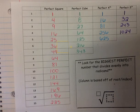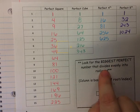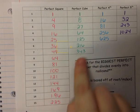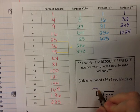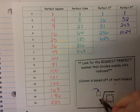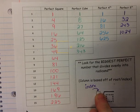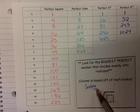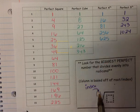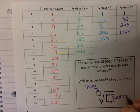The way we simplify radicals — and we're going to do some examples — is we look for the biggest perfect number that divides evenly into the radicand. The column we use depends on the root, which we call the index. This number inside the little nook of the radical symbol is our index. If it's a 3, we call it the cube root; if it's a 5, we call it the 5th root. The number inside the radical is called our radicand — that's what we are trying to simplify.